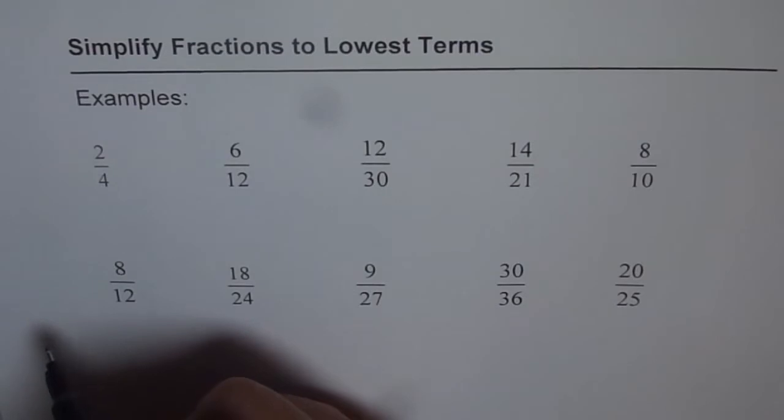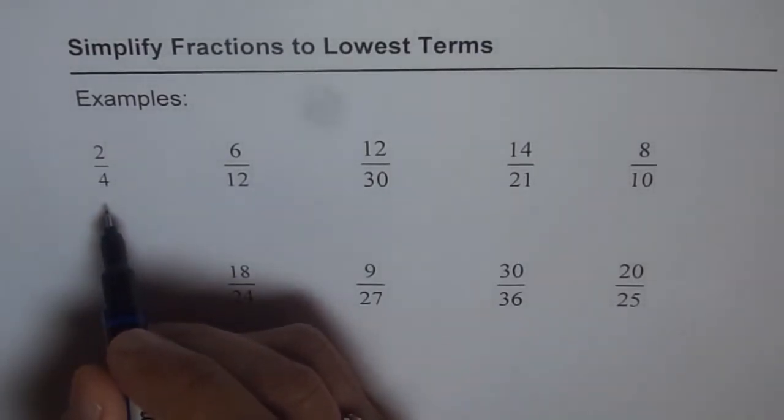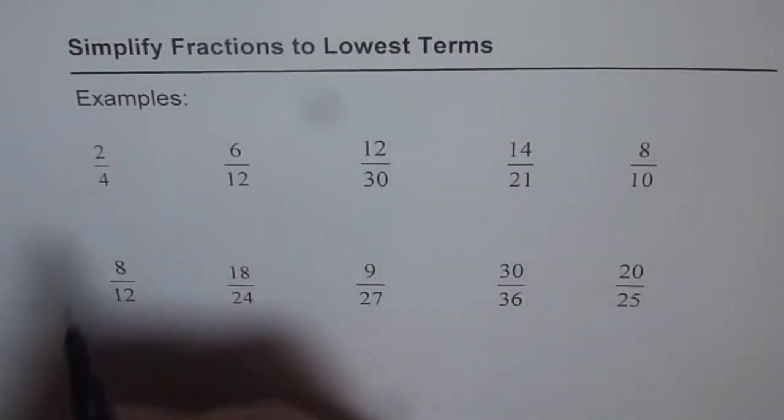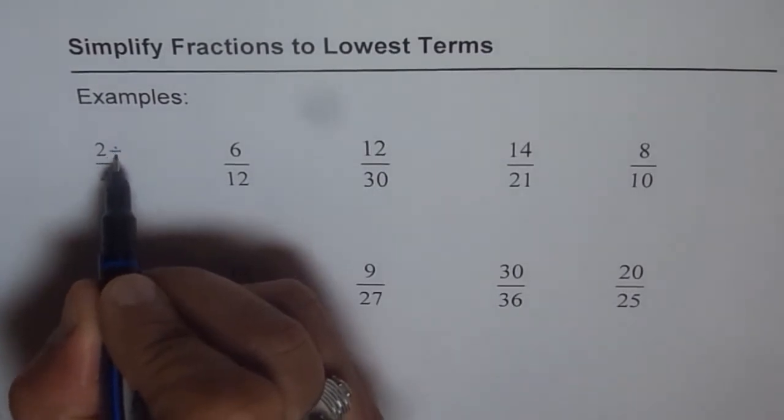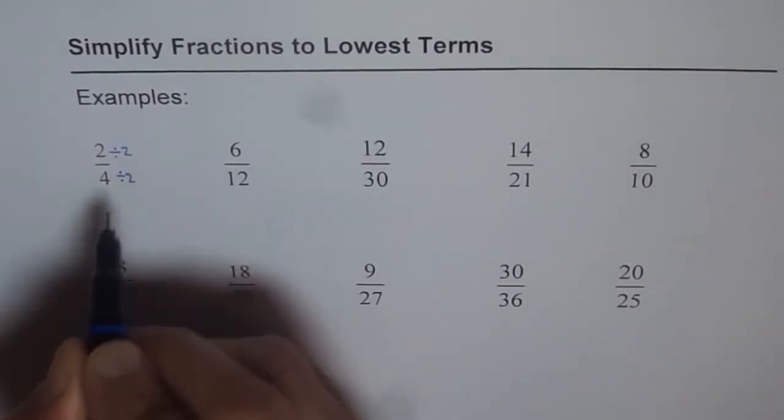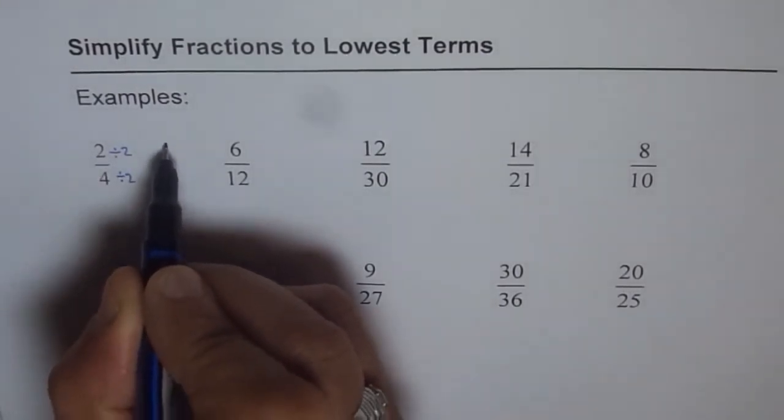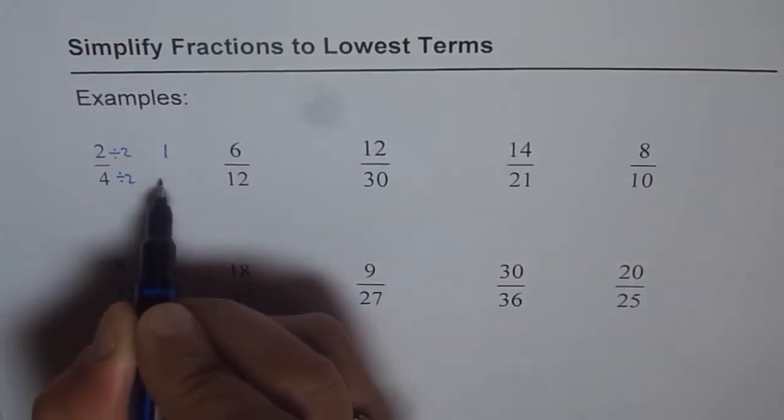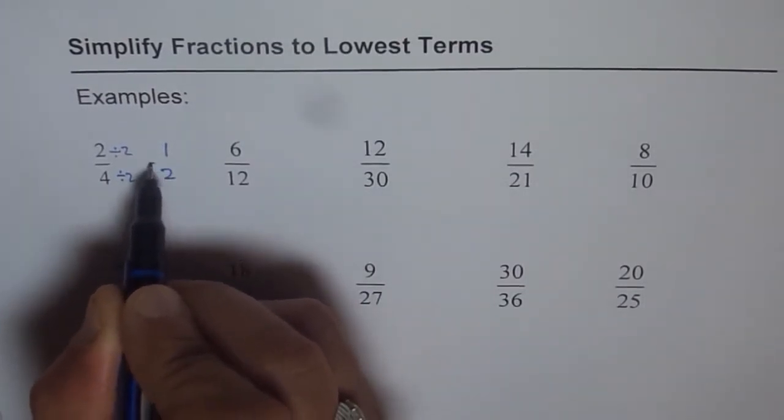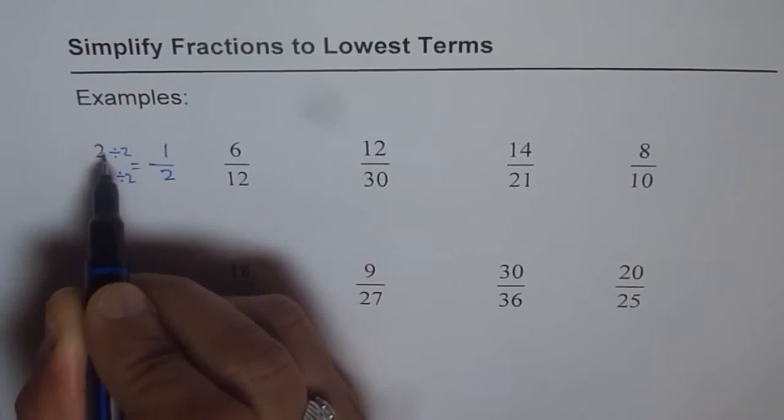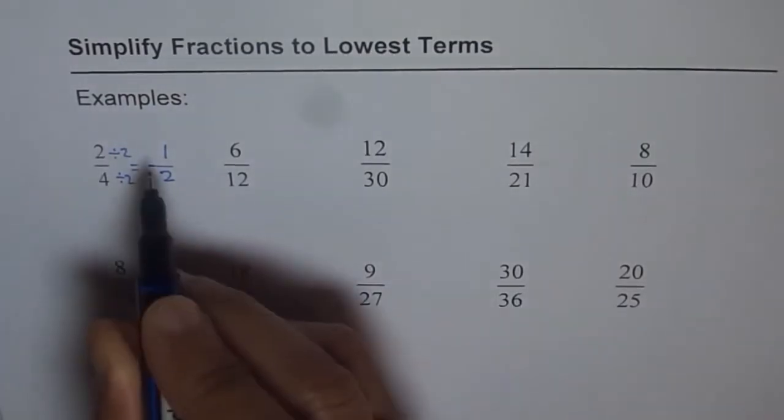2 over 4. Both are even numbers and so I can divide both by 2. If I divide both by 2, what do I get? 2 divided by 2 is 1 and 4 divided by 2 is 2. So I get 1 over 2. So 2 over 4 can be written as 1 over 2.